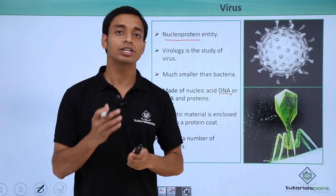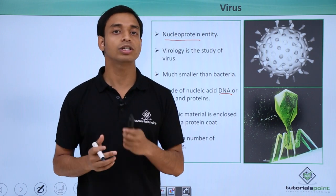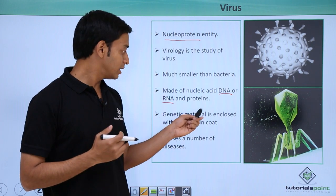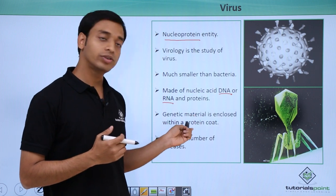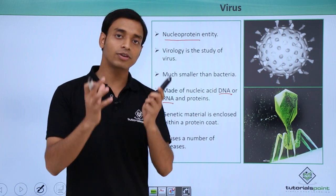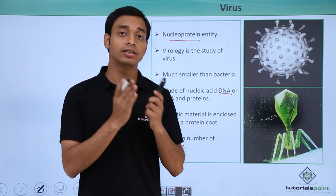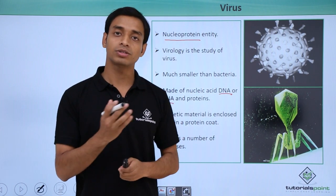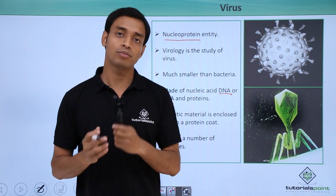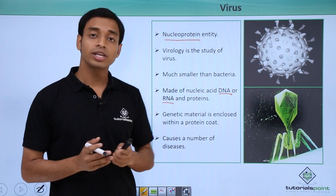The proteins cover the nucleic acids, forming a structure called a capsid. So proteins form a cover for the nucleic acids. The genetic material is enclosed within the protein coat, with the protein forming the outer coat and the genetic material — either DNA or RNA — remaining inside.